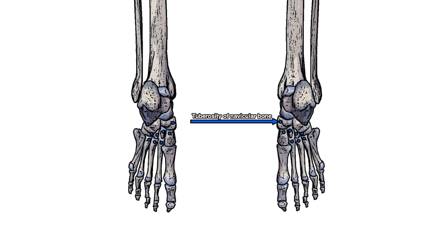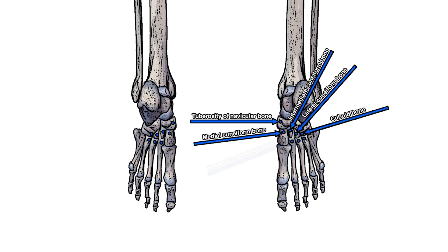Our first point of insertion is on the tuberosity of the navicular bone. Next we have an insertion on the medial cuneiform bone, next we have the intermediate cuneiform bone, the lateral cuneiform bone, the cuboid bone, and then lastly we have the metatarsals. So that's the base of the second metatarsal, the third metatarsal, and the fourth metatarsal.